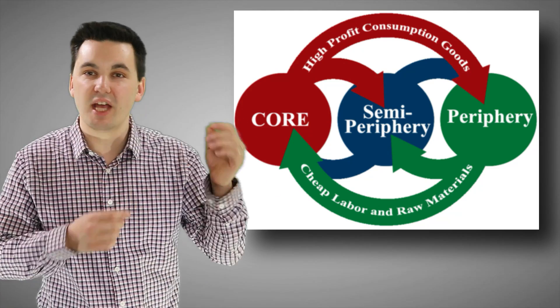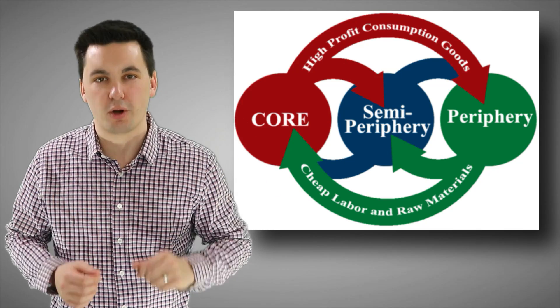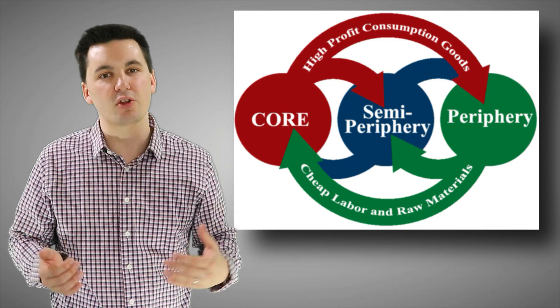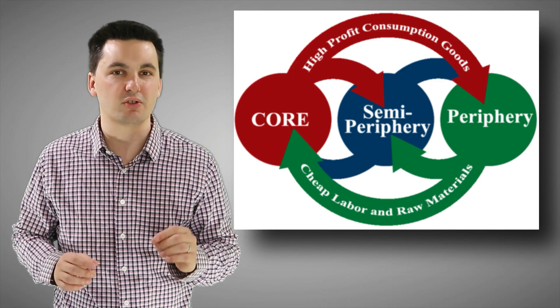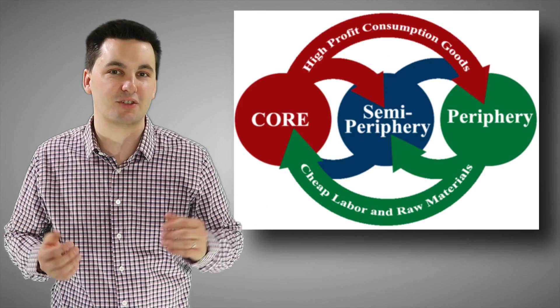Wallerstein's world system theory puts countries into three different categories. We can see that we have core countries, semi-periphery countries, and also periphery countries. Core countries are the most developed with the most advanced economies, with the periphery countries being the least developed and the weakest economies.